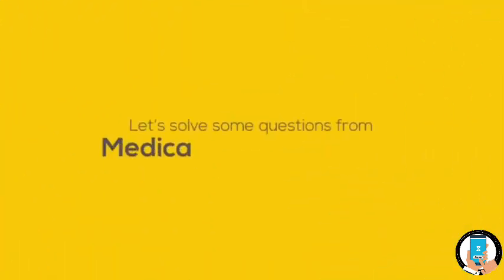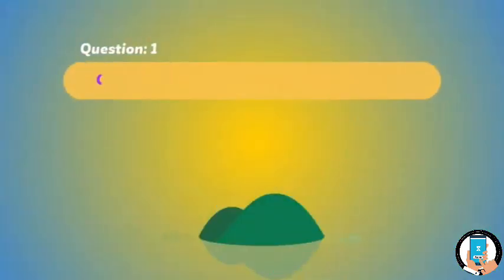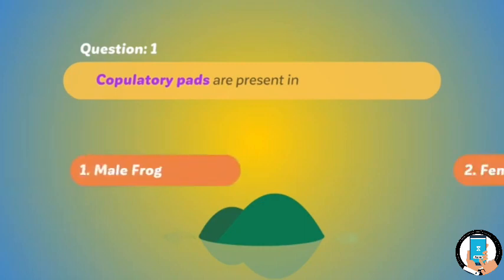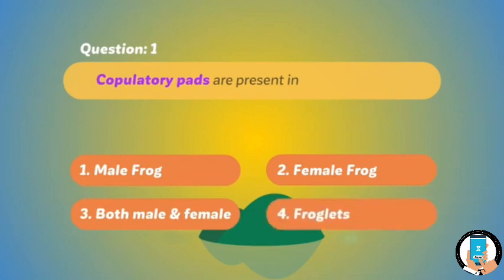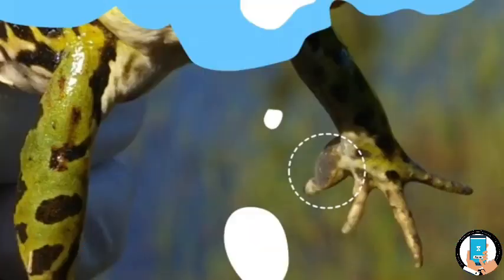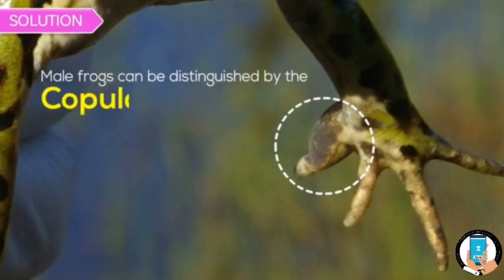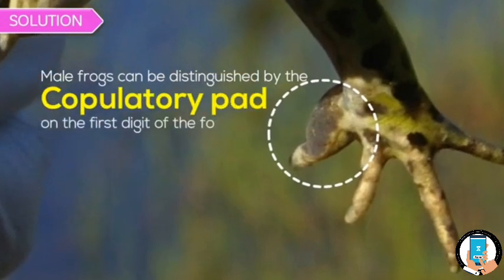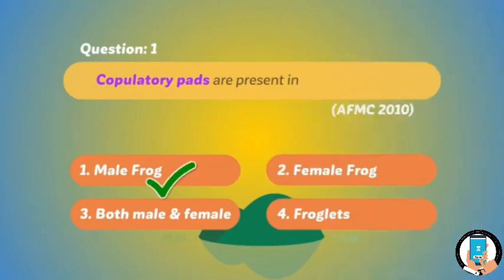Let's solve some questions from the medical entrance exam based on frogs. Question one: copulatory pads are present in — (1) male frog, (2) female frog, (3) both male and female, (4) froglets. This question was asked in AFMC 2010. Solution: male frogs can be distinguished by the copulatory pad on the first digit of the forelimbs, which are absent in female frogs. Hence option one is correct.